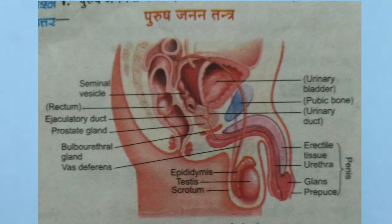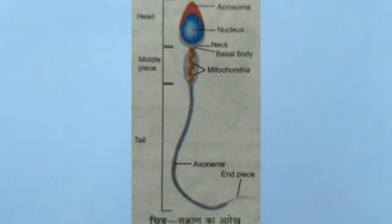Practice the diagrams and ensure that the labelling (naamankan) is also done correctly. Next is the Structure of Spermatozoa — the sperm diagram.